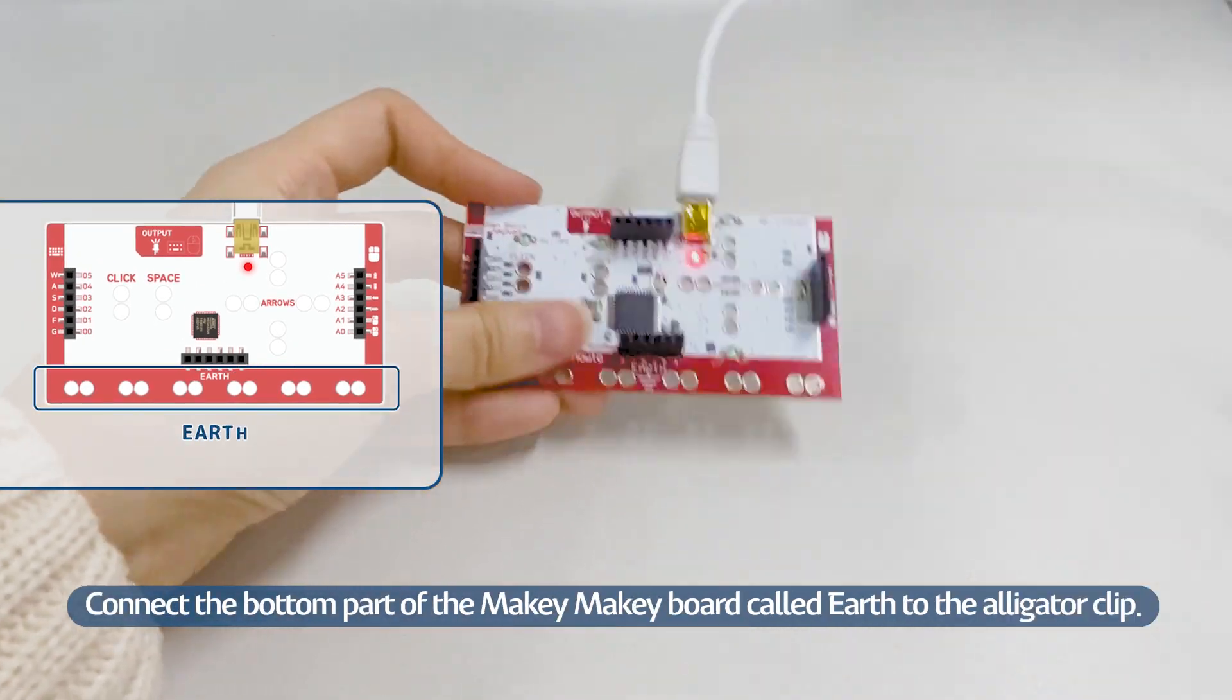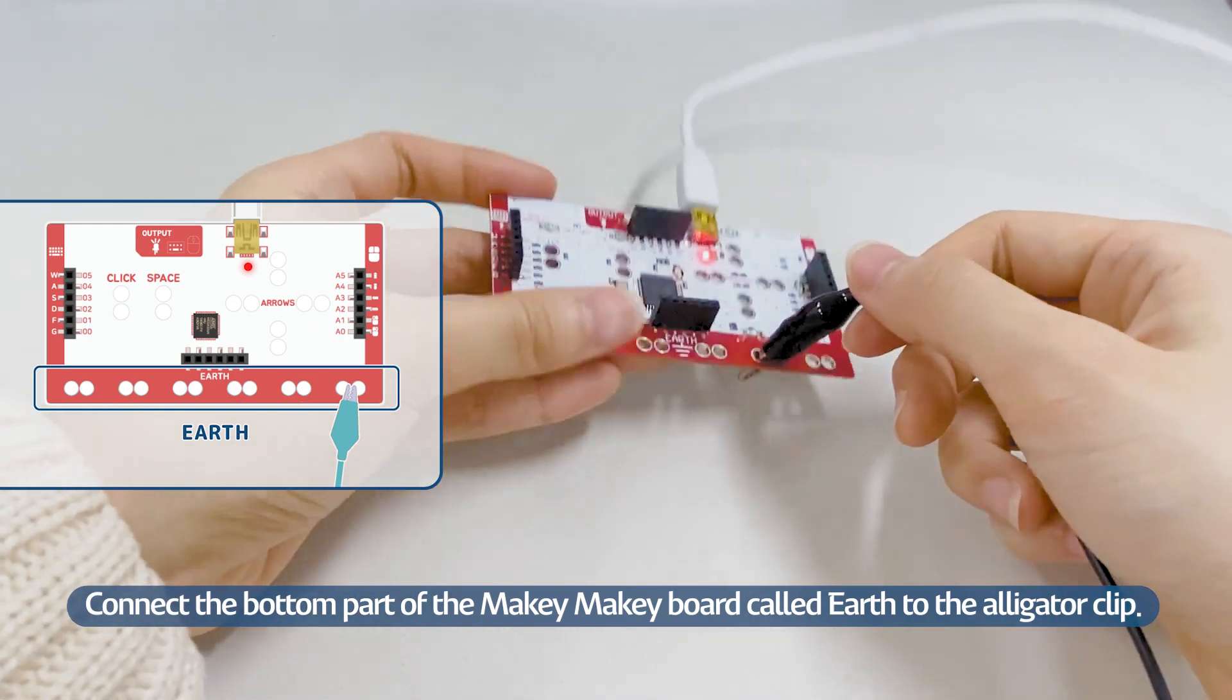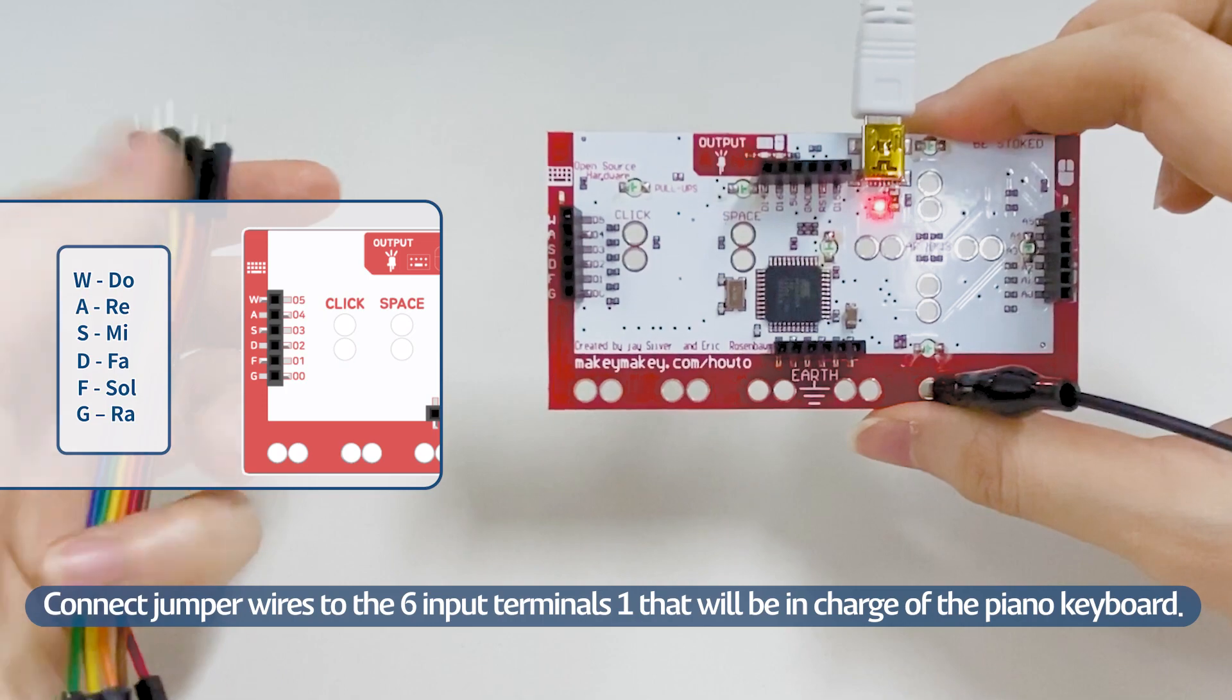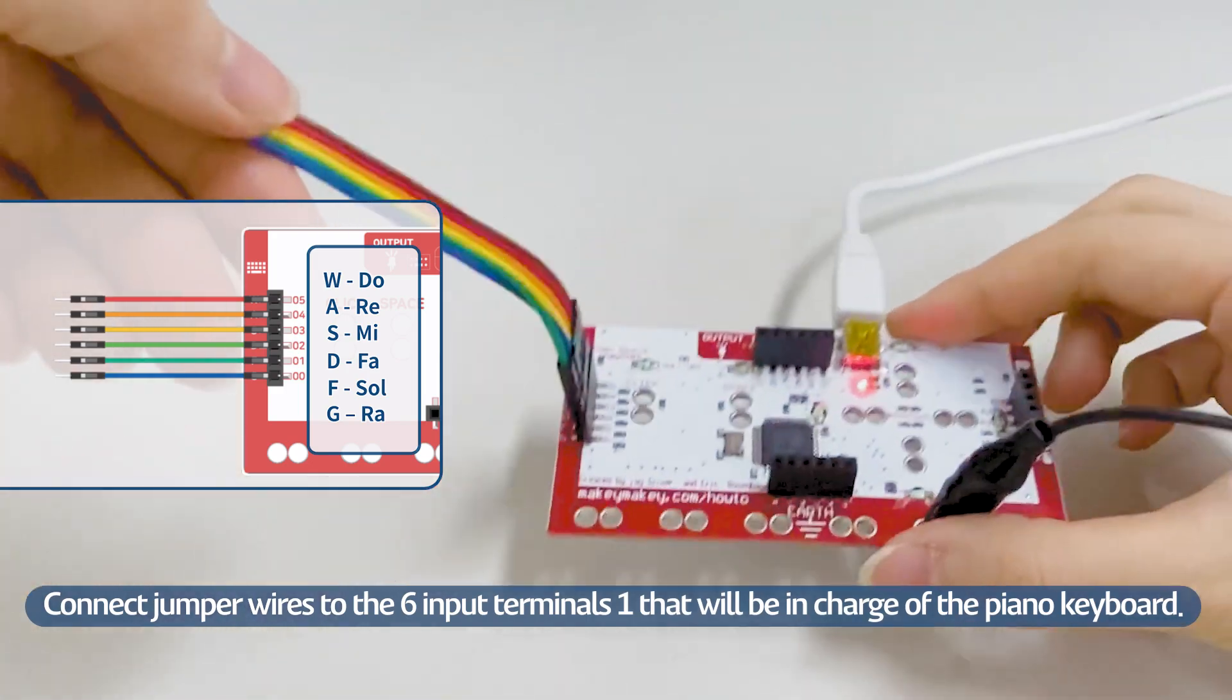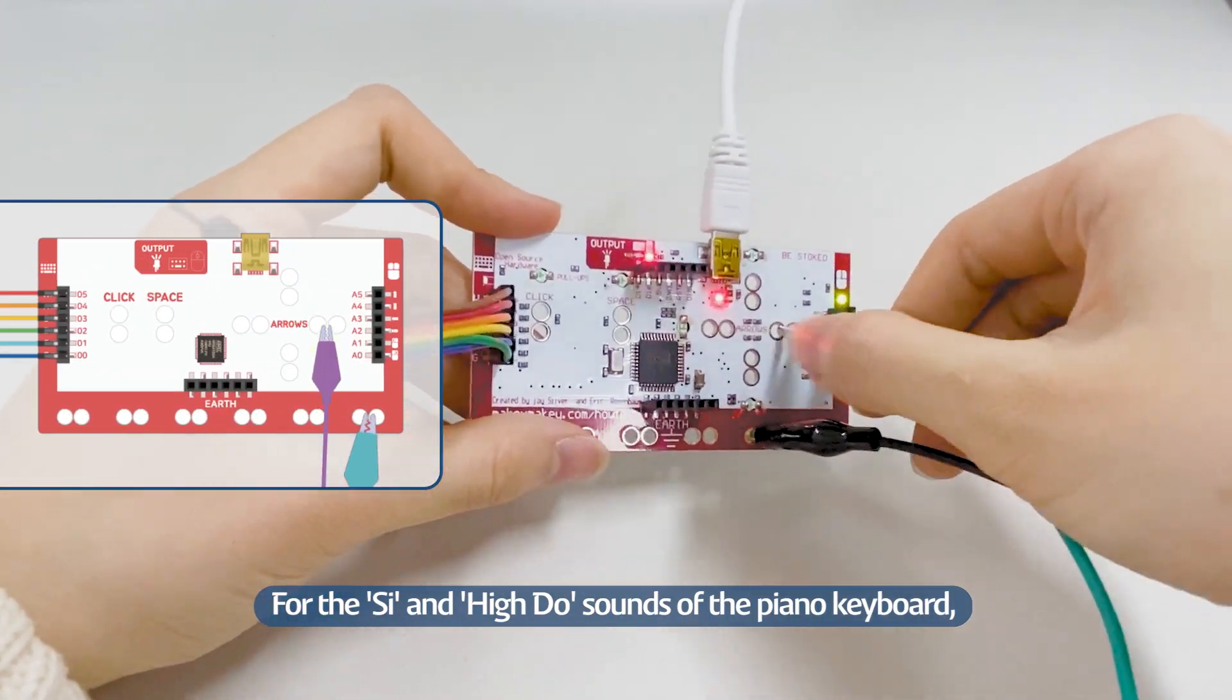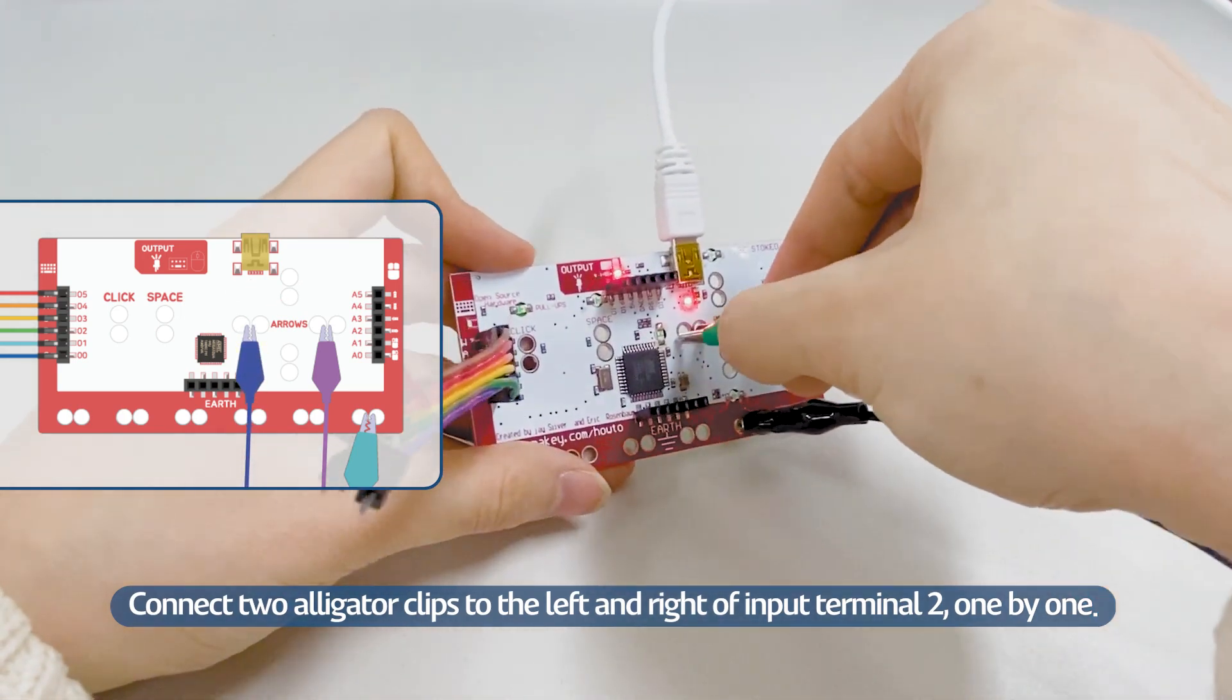Connect the bottom part of the Makey Makey Board called Earth to the alligator clip. Connect jumper wires to the 6 input terminals that will be in charge of the piano keyboard. For the additional sounds of the piano keyboard, connect 2 alligator clips to the left and right of input terminal 2, one by one.